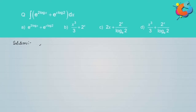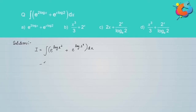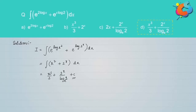We will integrate to verify the fourth option. The given problem is rewritten as e to the power of log x squared plus e to the power of log 2 to the x, which equals x squared plus 2 to the x. Integration gives x cubed over 3 plus 2 to the x over log base e of 2. Hence the fourth option is correct.